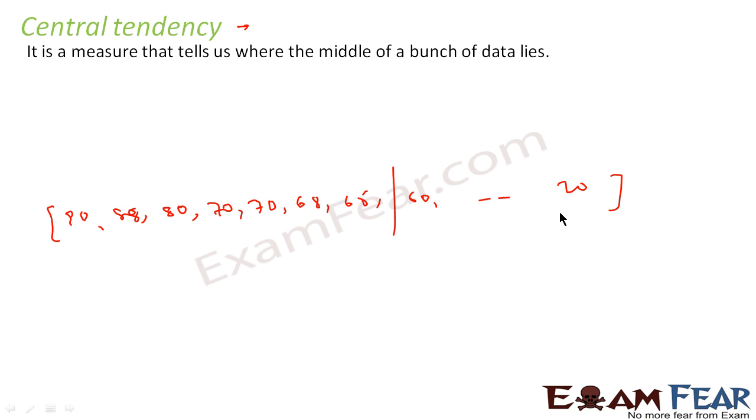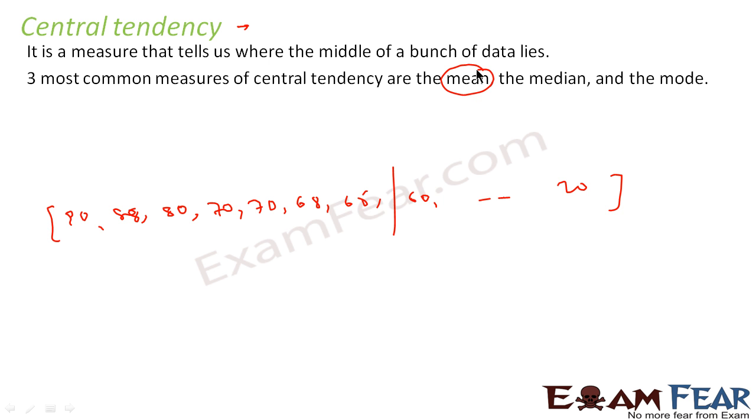Central tendency tells you from given data what is the average, where the middle of the data lies. There are three parameters or measures to find central tendency: mean, median, and mode. These are three measures of central tendency, which is a measure that tells you where the middle of the data lies.